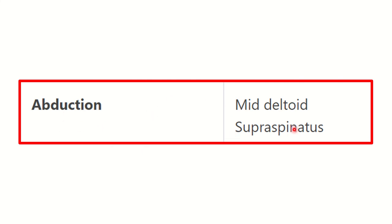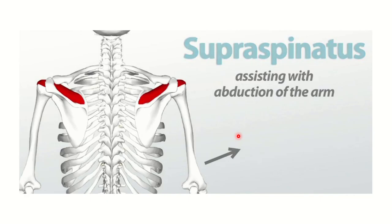The abductor muscles are mid deltoid and supraspinatus. Mid deltoid and supraspinatus are responsible for abduction of the shoulder joint. Here we can see the supraspinatus muscle, which lies in the supraspinatus fossa of the scapula.